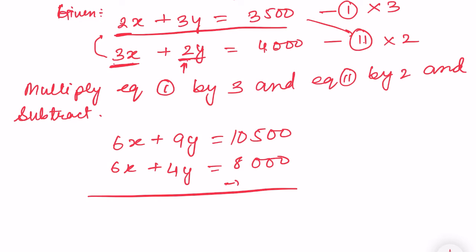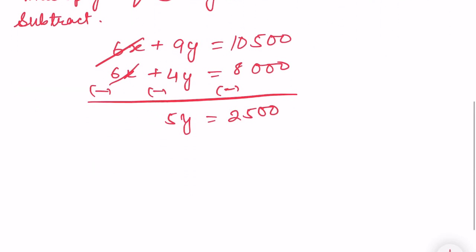And if you subtract, these two will cancel. 9 minus 4 will be 5y. And 10,500 minus 8000 will be 2500. Therefore, y equals 2500 divided by 5, which is 500.